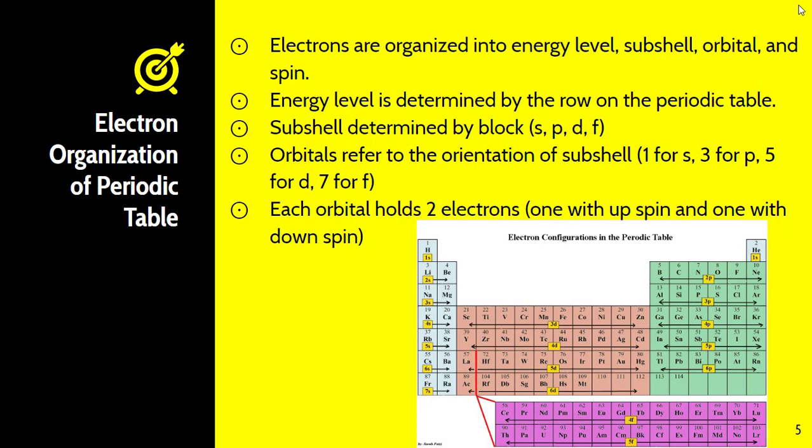When we talk about electrons, we need to talk about how they're organized on the periodic table. Electrons are organized in a very specific way. You need to understand how to find electron configurations and how they are organized. Electrons are organized by energy level, subshell, orbital, and spin — those are the four primary quantum numbers. The energy level is determined by the row on the periodic table: first row is one, second row is two, third row is three. Subshell is determined by the block they are in, whether it is S, P, D, or F.